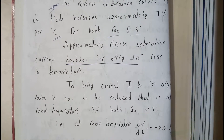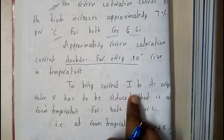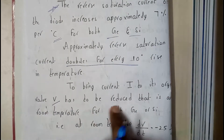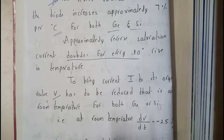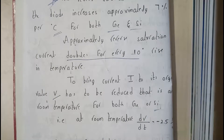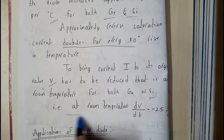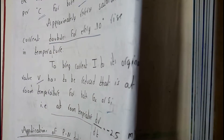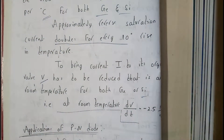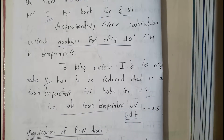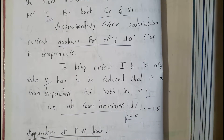To bring the current I back to its original value, the voltage V has to be reduced to room temperature. At room temperature the difference should be minus 2.5 millivolts per degree Celsius.